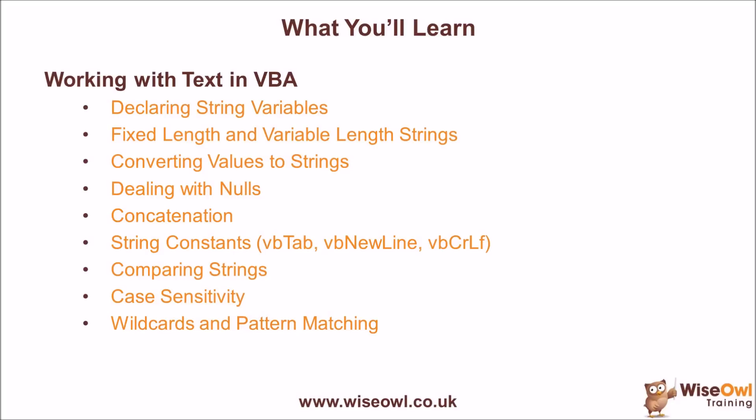We'll explain how you can convert values of different types into strings, which in VBA happens implicitly in most cases. We'll also talk about how to deal with nulls, which is one thing you can't convert into a string. We'll spend time on concatenation and two different operators you can use, and talk about string constants for special characters like tab characters and new line characters, explaining why there are so many different types of new line constants.